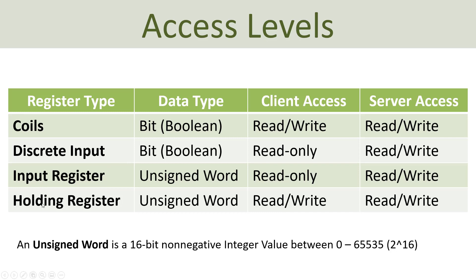The input register and the holding register are unsigned word, so you can use those registers for storing process values, while coils and discrete inputs are only for boolean values. For coils, you can either write data to or read data from them on the client side, while discrete input is read-only, input register is read-only, and a holding register supports both writing and reading.